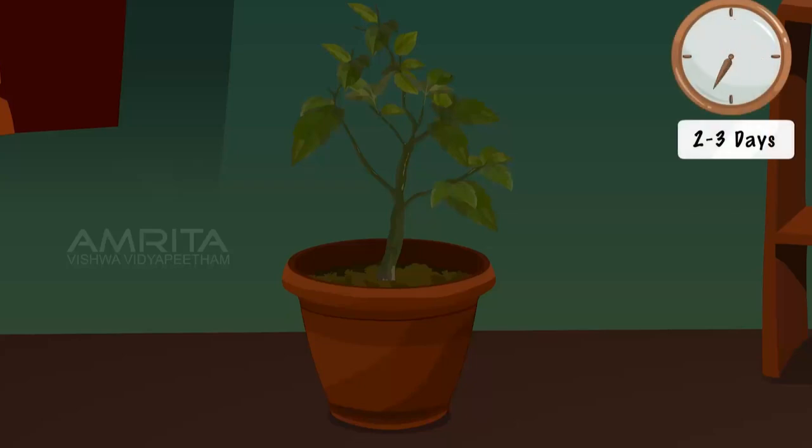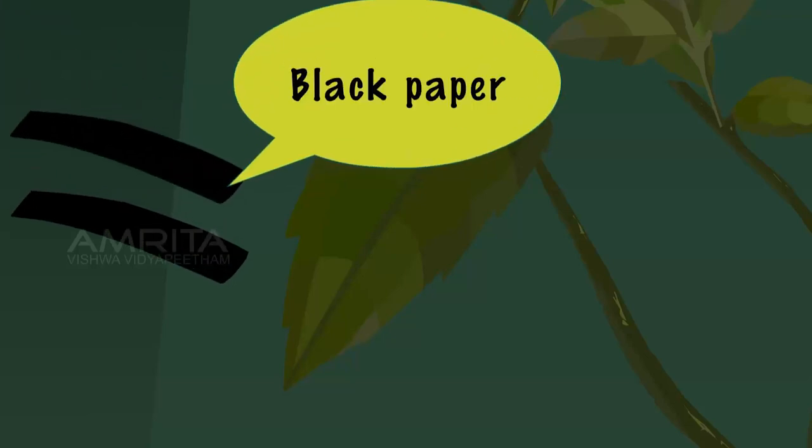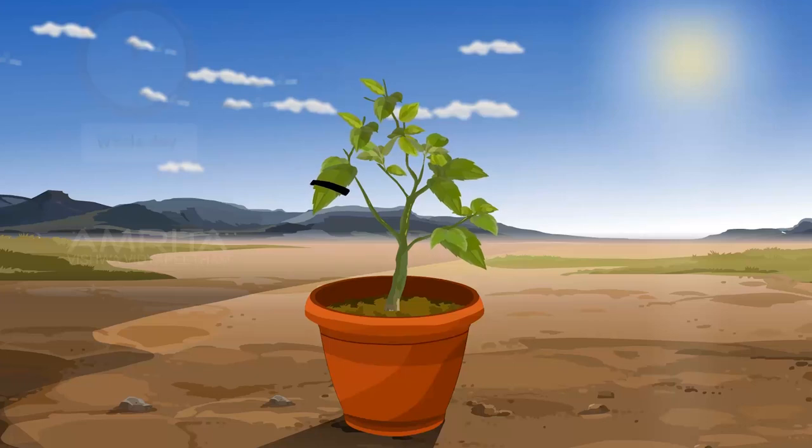Take a healthy potted plant and keep it for 2-3 days in a dark place. Take two uniform pieces of black paper. Select a healthy destarched leaf and cover a portion of the leaf on both sides using these two uniform pieces of black paper. Now, place the potted plant in sunlight for the whole day.